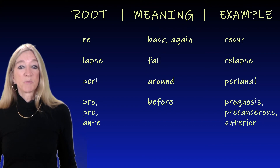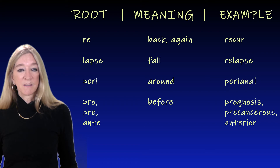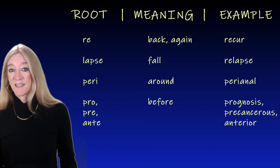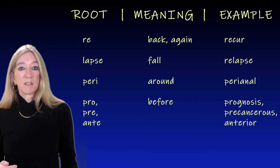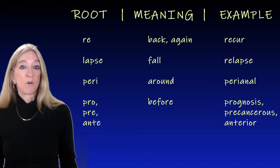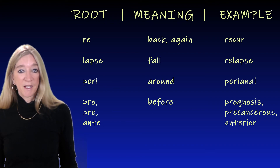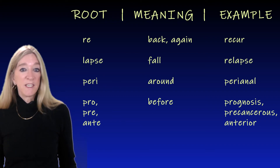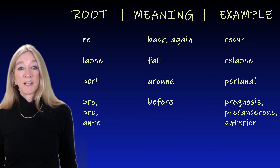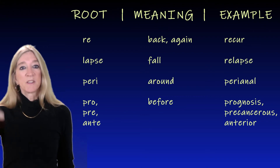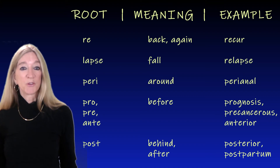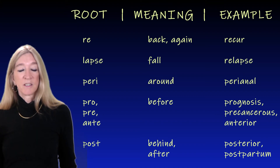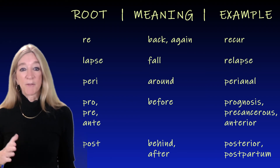The roots 'pro,' 'pre,' and 'ante' (A-N-T-E, not A-N-T-I), meaning before. Examples are prognosis — knowing before, literally — and precancerous, a condition before cancer or leading to cancer. And anterior, as in the anterior cruciate ligament. 'Post,' of course, is the opposite, meaning behind or after. Posterior, as in the posterior cruciate ligament. There is also postpartum depression — depression after a woman gives birth.